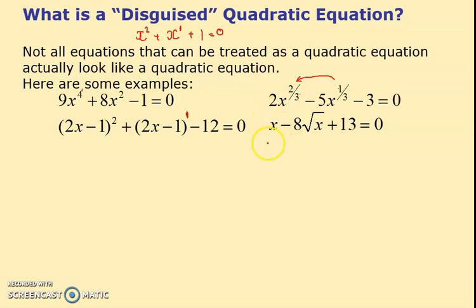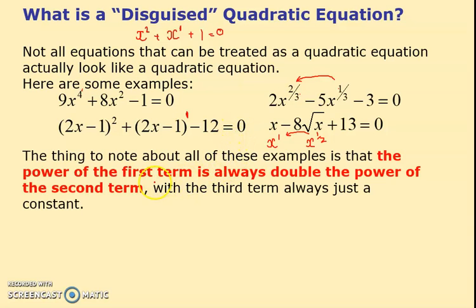Well that surely can't work. If you think about powers, that can be written as x to the half. Notice how the power has doubled and the last one again has got no power. The power of the first term is always double the power of the second term with the third term always just a constant.